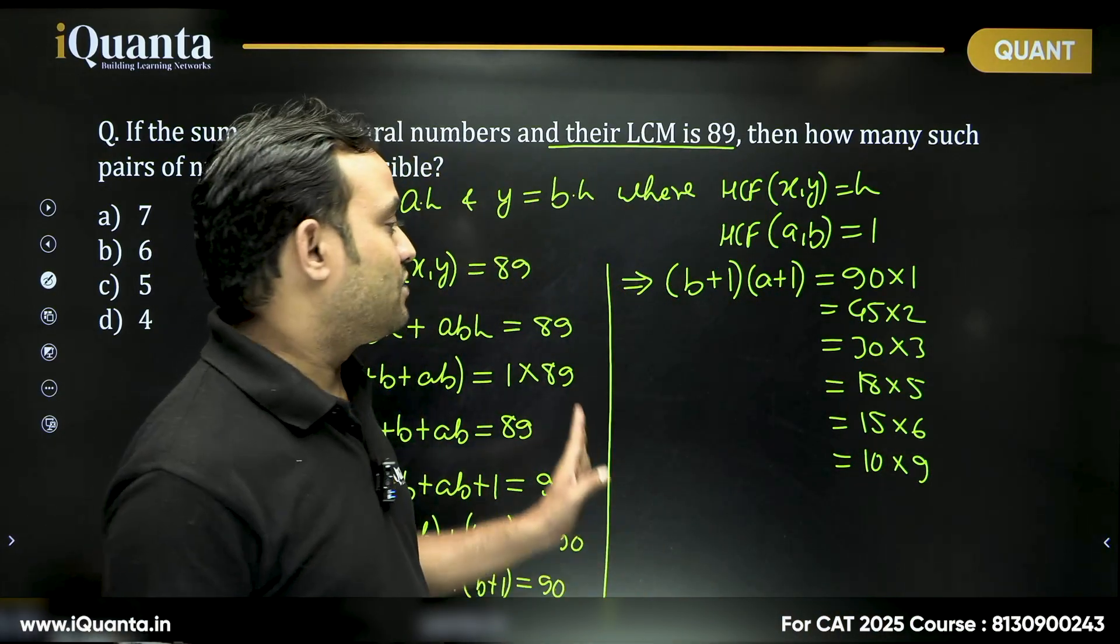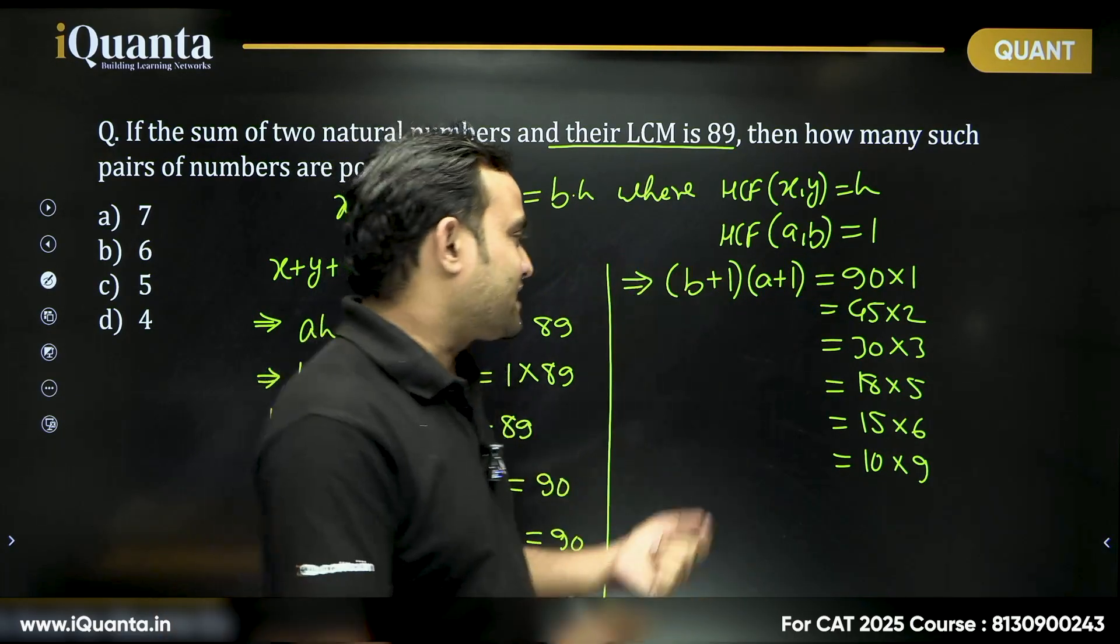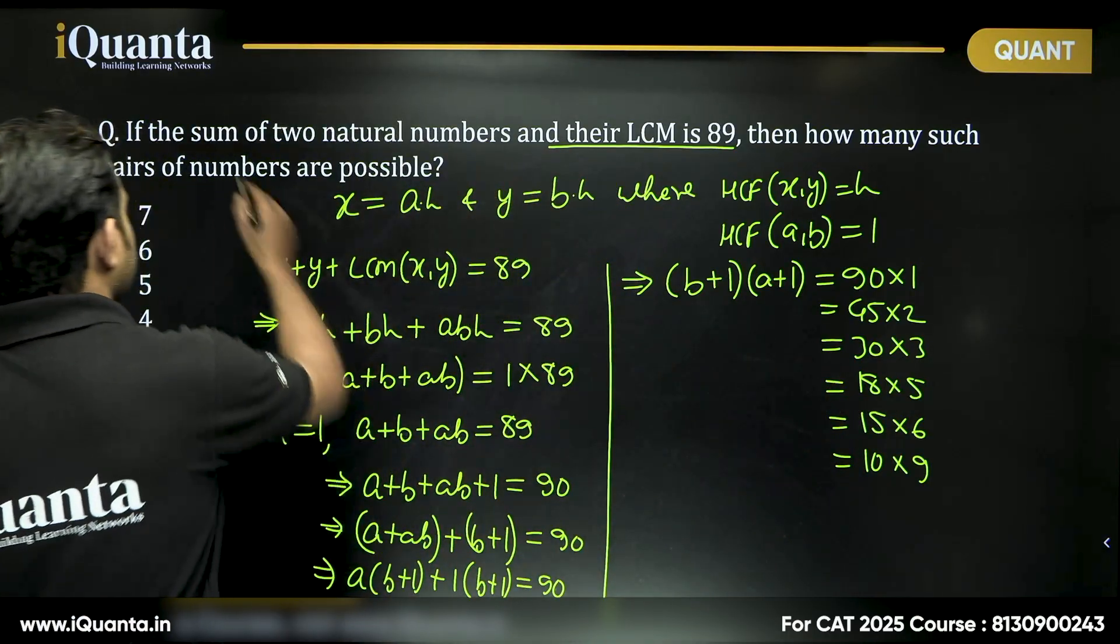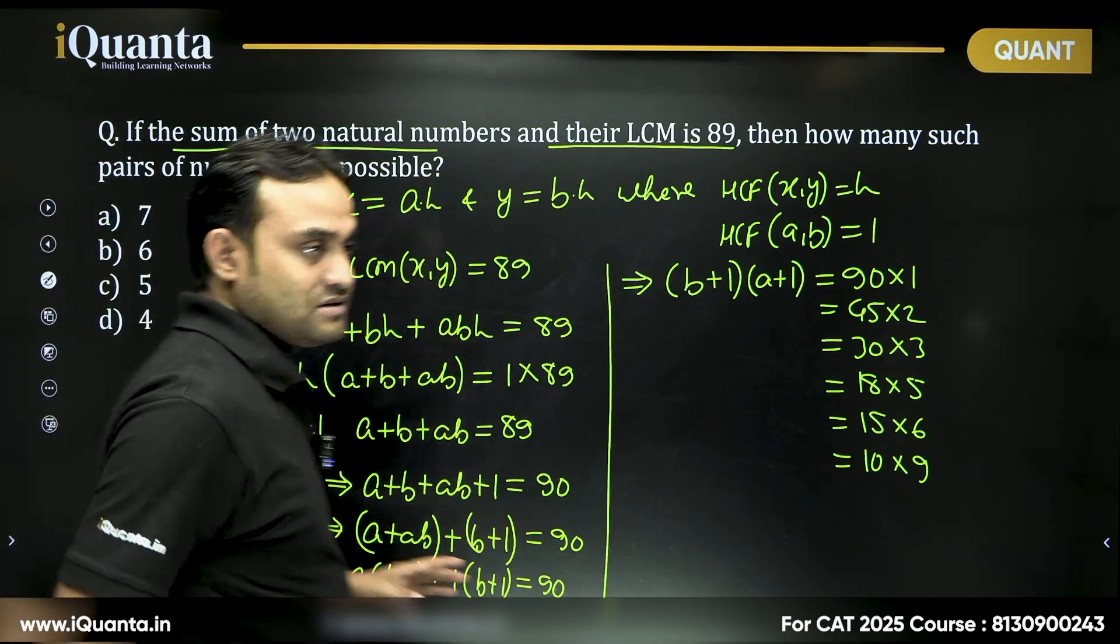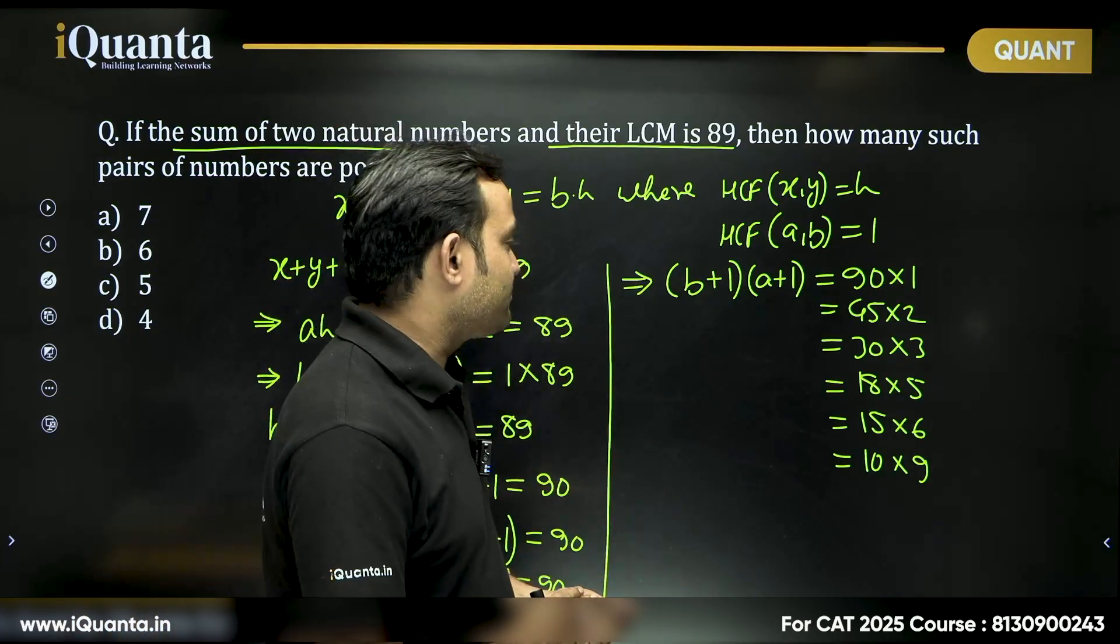Now, these many ways are possible. We don't need to take the ordered pairs. We don't need to take the reverse of it, because initially there's no name of the numbers. So X and Y, Y and X, both pairs will be the same.